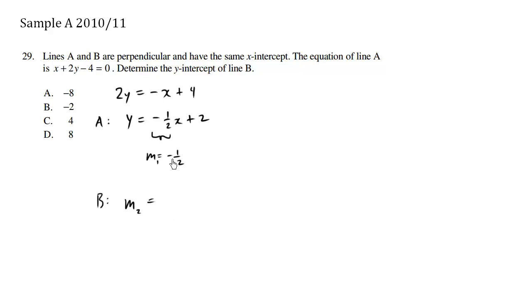The negative becomes positive, and the reciprocal means the numerator and denominator switch. So we get 2 over 1, which is the same thing as 2. So we have the slope of line B.